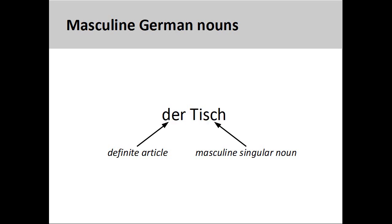The German noun 'Tisch,' meaning table, has a masculine grammatical gender, so its definite article is 'der.' Here the grammatical gender does not indicate any biological gender of the noun.